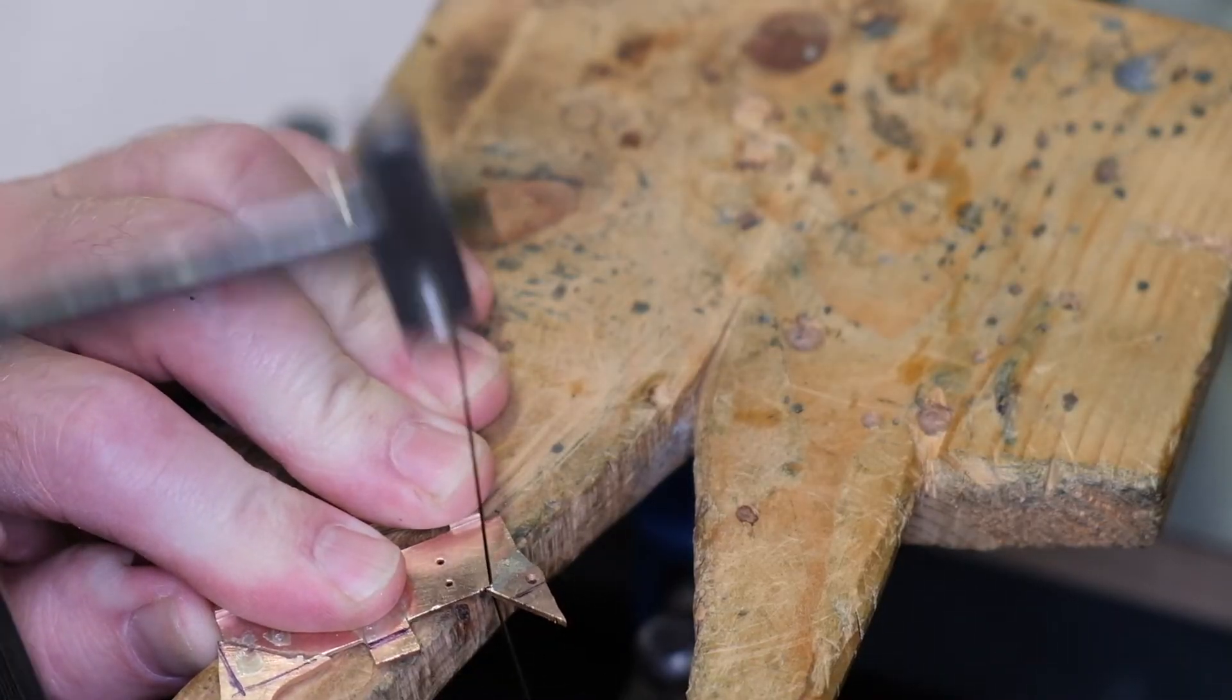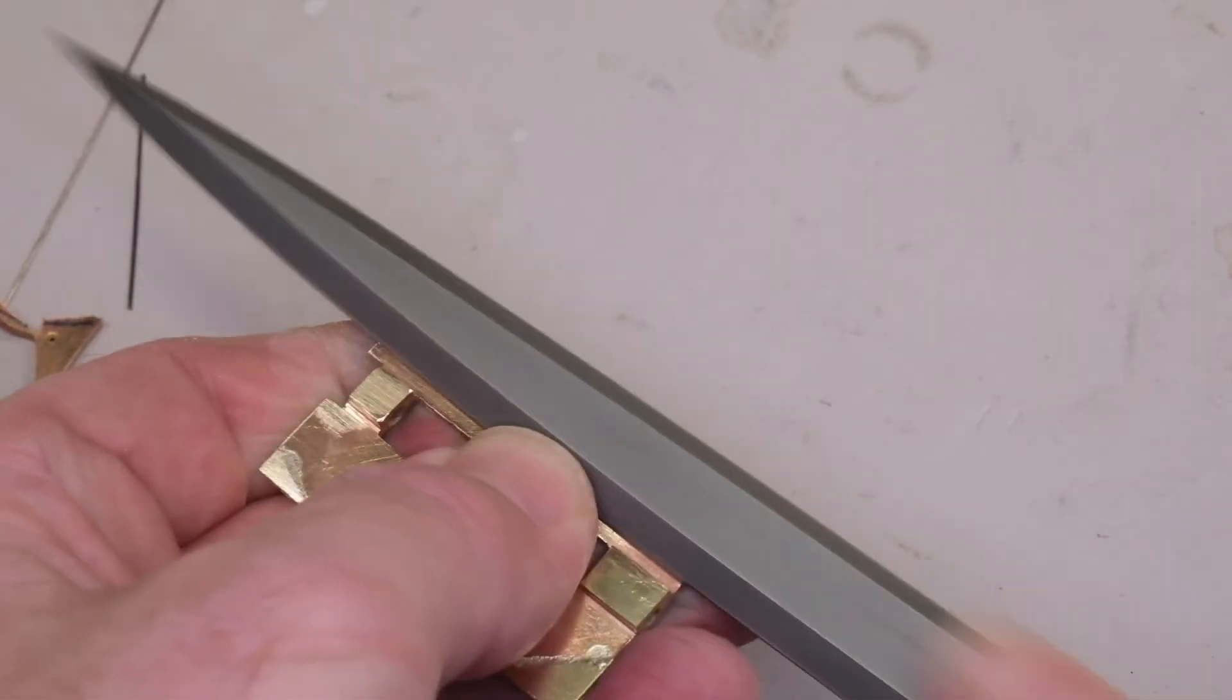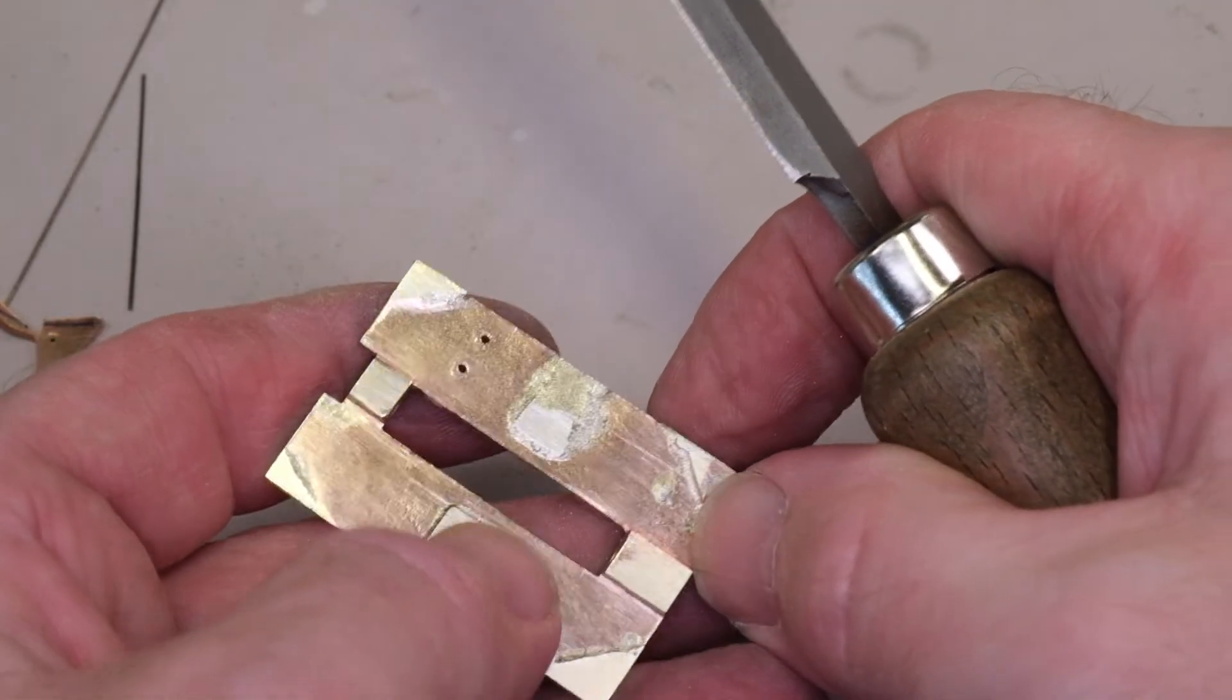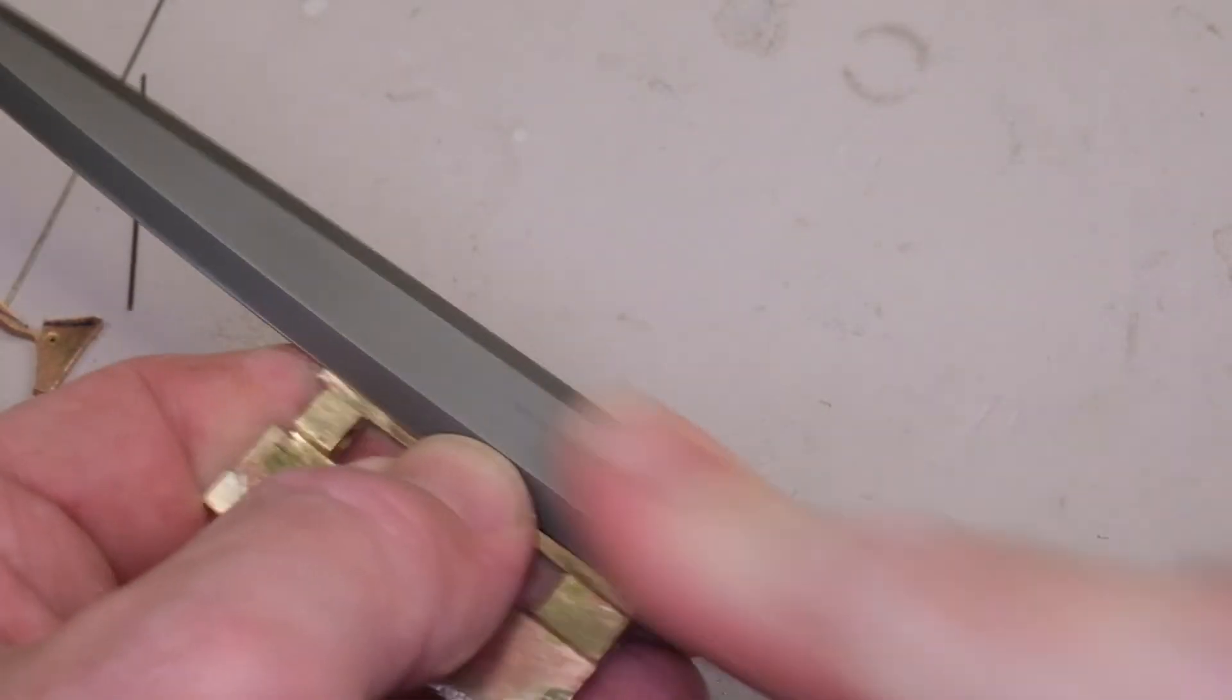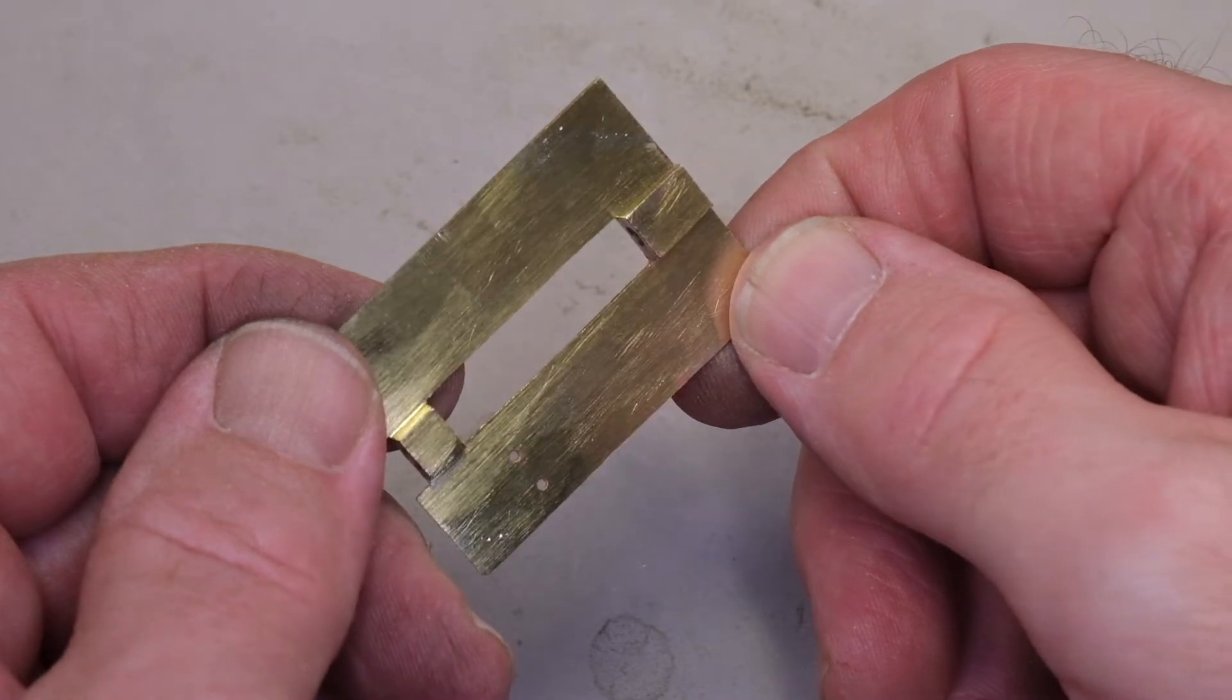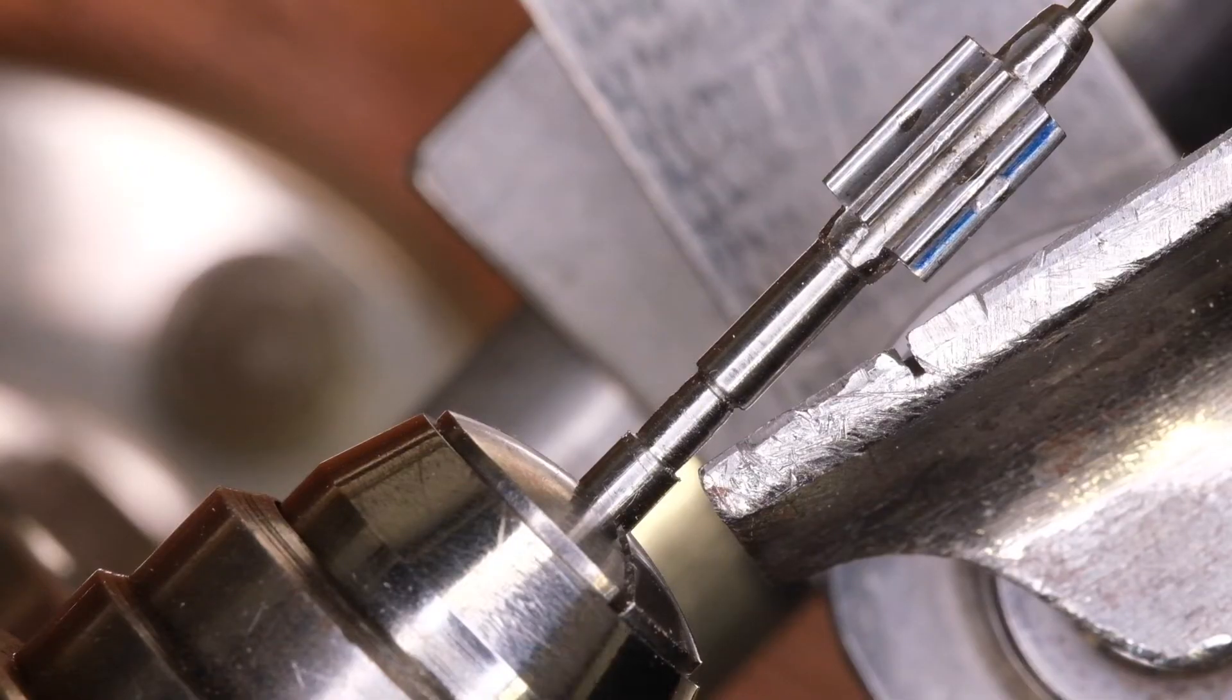And then we begin the kind of long process of cutting off the excess and then filing down flat again. As I said earlier, it's arguable whether it would have been a lot easier. I'm sure it would have been easier to just begin with a new piece of material, but in a way the principle of course is to preserve as much of the clock as possible. However, in this case I think it was probably borderline. So with an amount of filing and tidying the whole thing up, we now are back to one reasonably coherent piece of material.